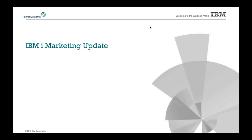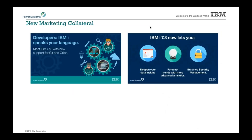The marketing team has created a couple of new things — some new posters you'll see in different places. With our Git and Orion support, 7.3 has gotten some new stuff for enhanced security as well as deepening of our data insight. We're starting to see some help from the marketing team, which I'm personally very excited about.